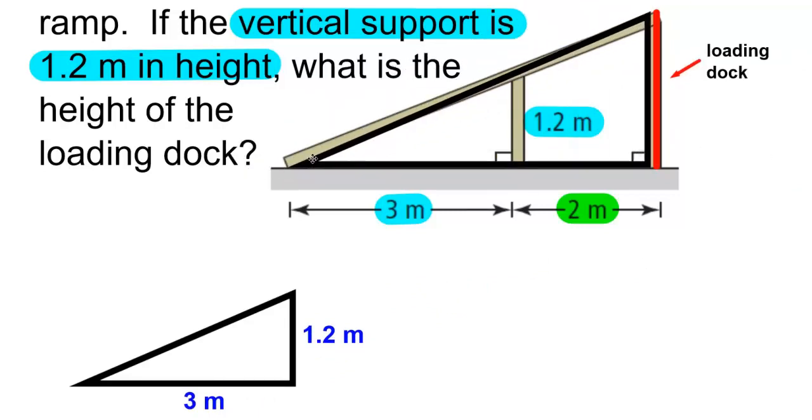The next triangle would be located here. The height of the triangle is the loading dock, and that's our unknown, so we'll put X there. The base of the triangle will be 3 meters plus 2 meters, which is 5 meters.